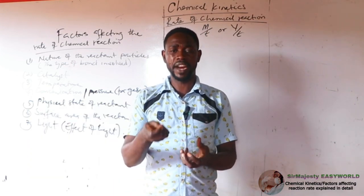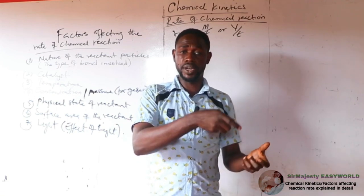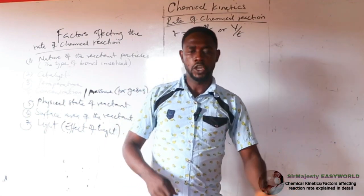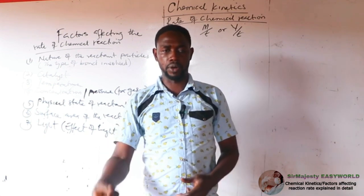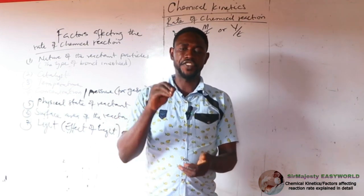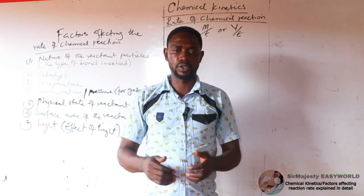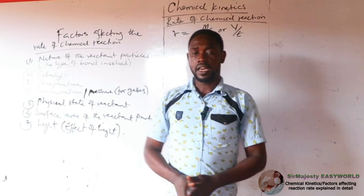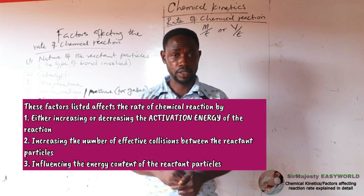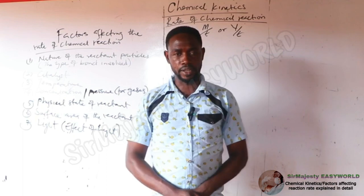During chemical reaction we deal with bond breaking and bond formation. There must be enough energy to break the already existing bonds and establish new bonds in the products. The effective collision is the collision that is sufficient to break the bonds holding the reactant particles. These factors will affect the rate by altering the energy content of the reactant particles, the activation energy, and the number of effective collisions.